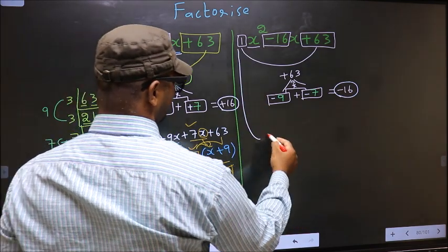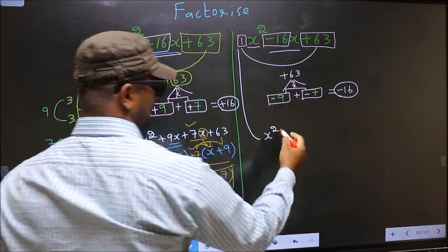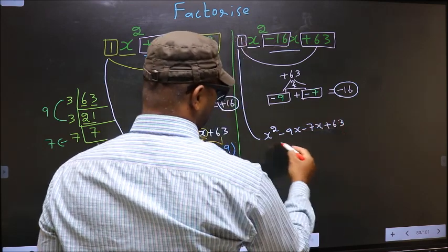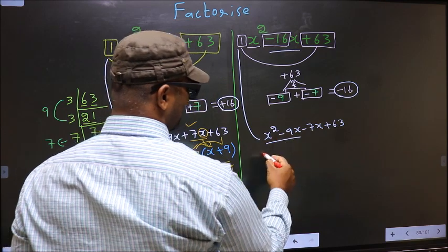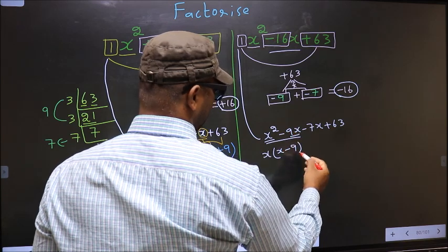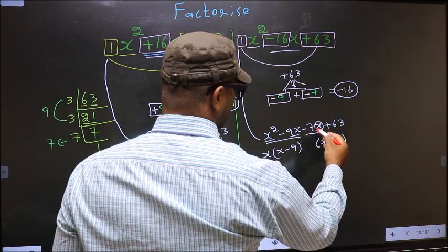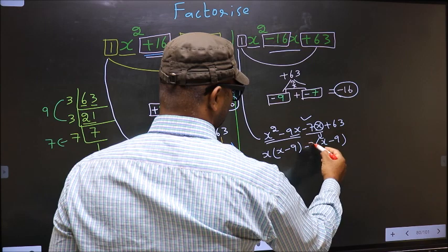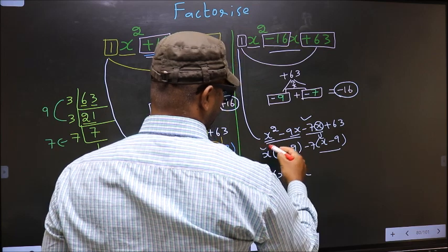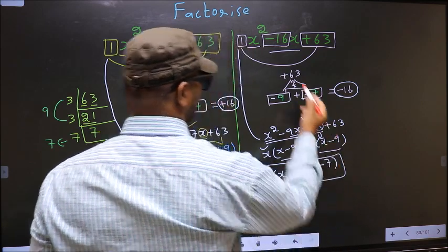Now for the second expression, in place of minus 16x, we should write minus 9x minus 7x plus 63. Now from these two terms, what can be taken out common? x. So here you get x minus 9. Now from the remaining terms, x goes inside so outside you get minus 7. Now you take out x minus 9 as common, so here you have x and here minus 7. The answer is (x minus 9)(x minus 7).